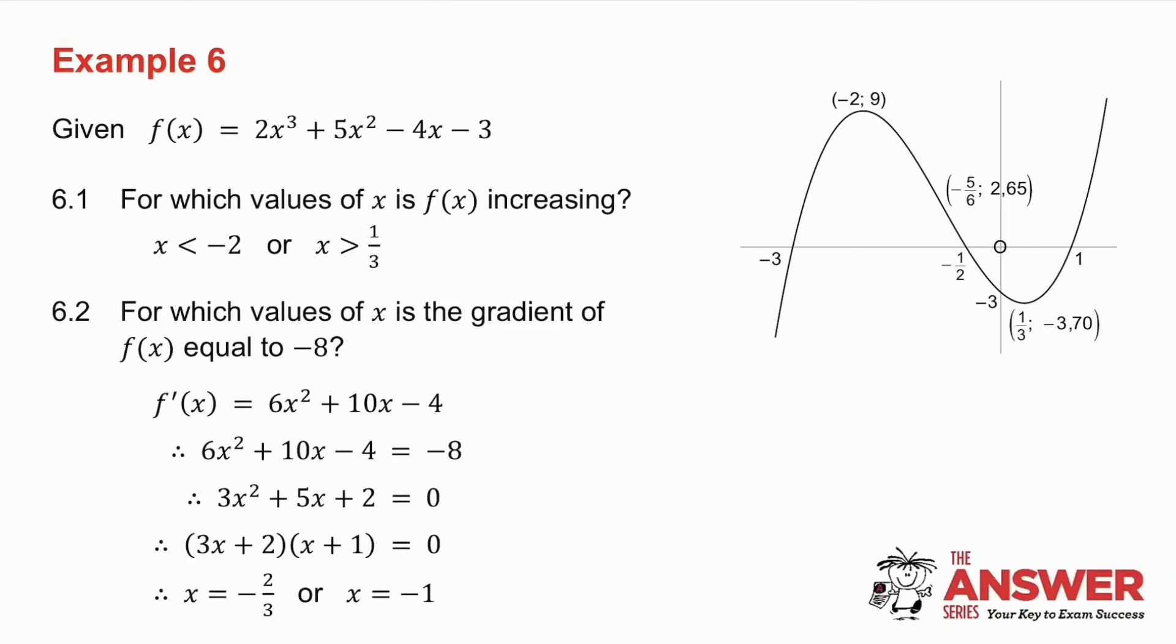The first question asks you, for which values of x is f(x) increasing? Now this is exactly the same as saying where's the derivative positive. So my graph is increasing there, when x is less than minus 2, or there, when x is greater than a third. So that's my answer.